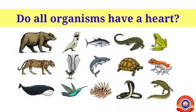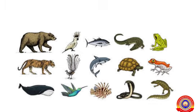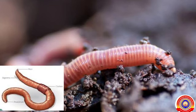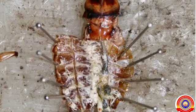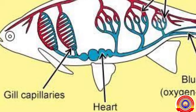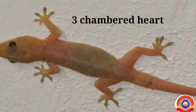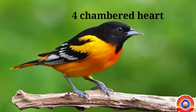Do all organisms have a heart? Let's see certain organisms and the number of chambers of their heart. Earthworm has five pairs of lateral hearts. Cockroach has a thirteen-chambered heart. Fish has a two-chambered heart. Lizard has a three-chambered heart. Crocodile and birds have a four-chambered heart.